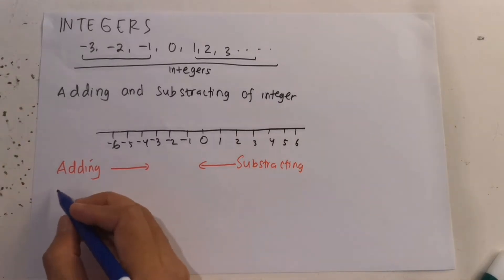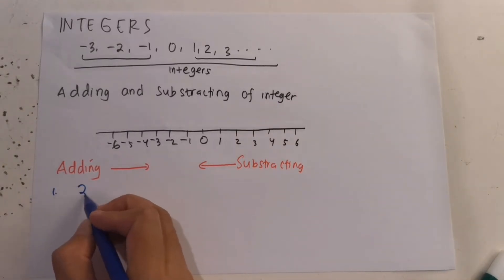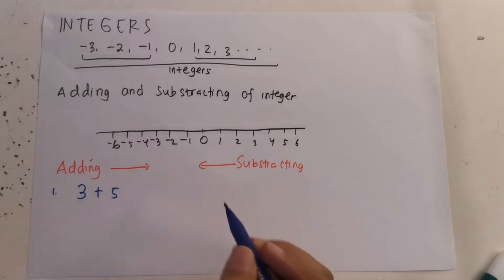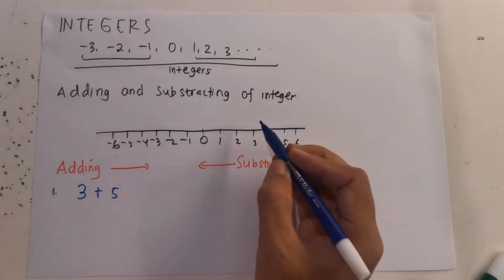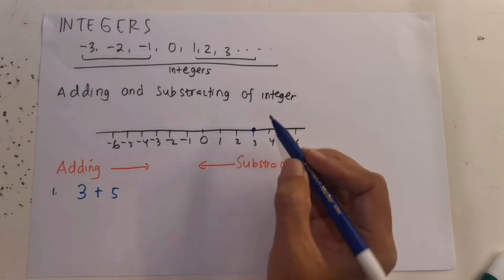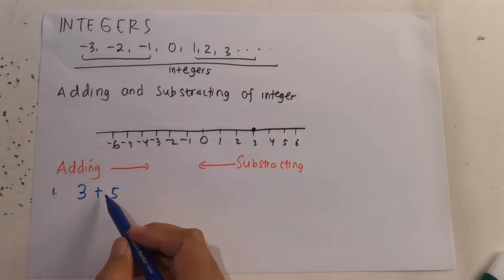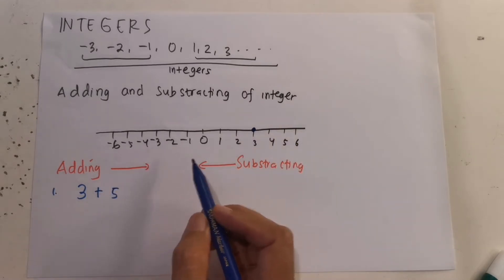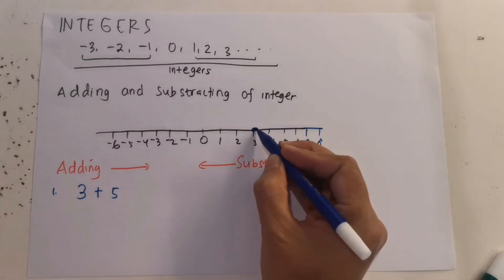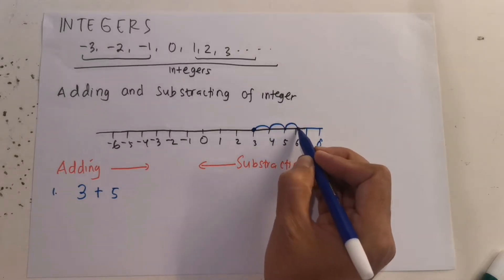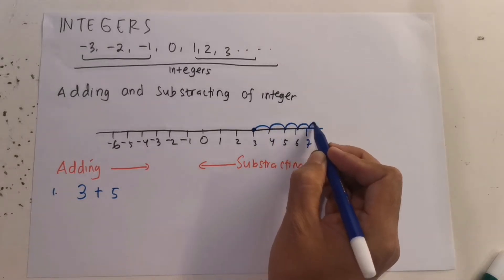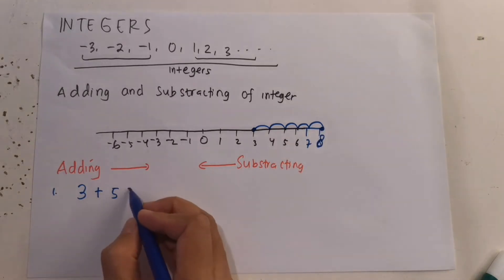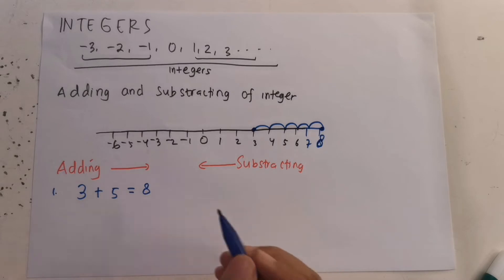Example 1: 3 plus 5. We start from number 3. Because this is adding, we move to the right 5 places — 1, 2, 3, 4, 5 — and we end at number 8. So the answer is 8.